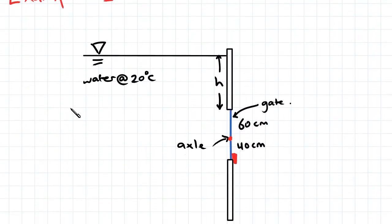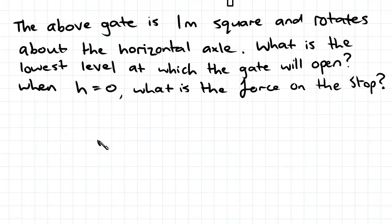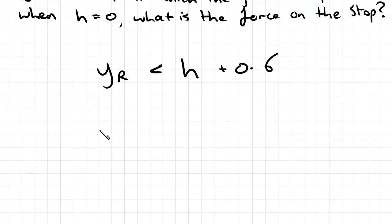So the gate will start to open when FR creeps above that axle point. So our FR as the tank is filled will move up until it just extends beyond that axle point. So this question is really asking at what YR the FR will creep above that. So our YR will just be H plus 0.6 and we need it to be less than that. So we're trying to find when our YR is less than H plus 0.6 and we know our equation for YR equals YC plus IXC on YCA.